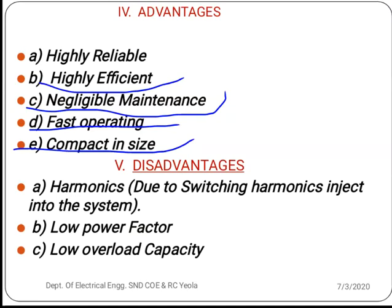The disadvantages of power electronics systems are: first, harmonics injected into the system — this is a very significant disadvantage; second, low power factor — as you are aware of the role of power factor in electrical power systems; and third, low overload capacity — this is also a disadvantage of power electronics systems.